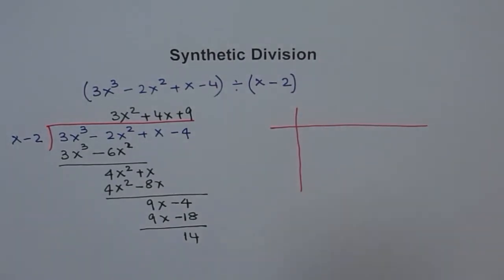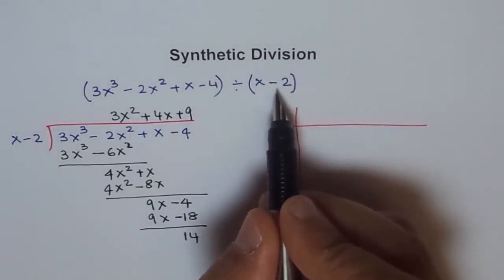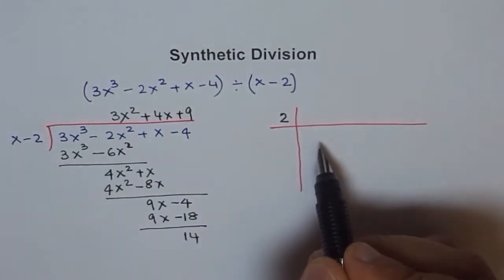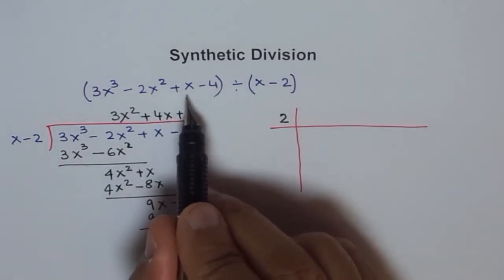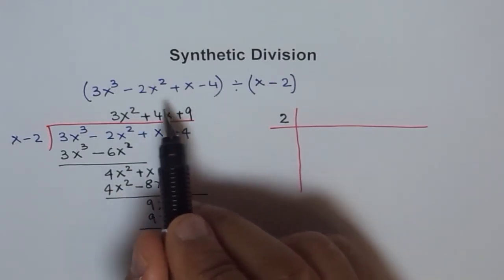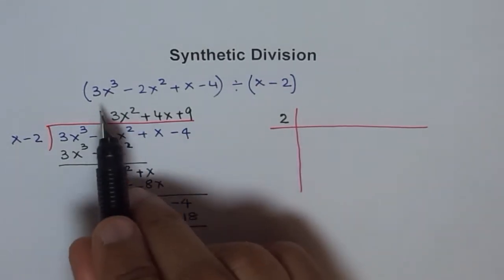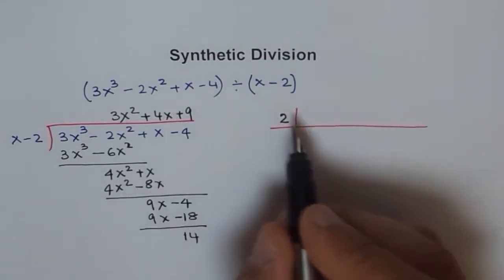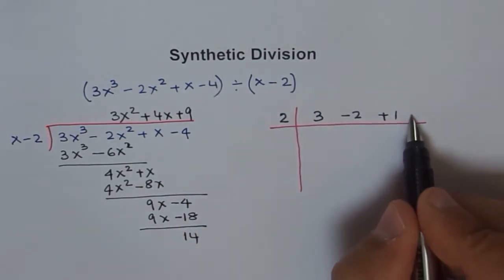In synthetic division we look at the divisor x minus 2. What makes it zero? x equals 2. So we divide using the number 2. Next, we write only the coefficients of the dividend. If any terms are missing, write 0 for those. Here all terms are present, arranged from highest to lowest degree, so the coefficients are: 3 for x³, minus 2 for x², plus 1 for x, and minus 4 as the constant.